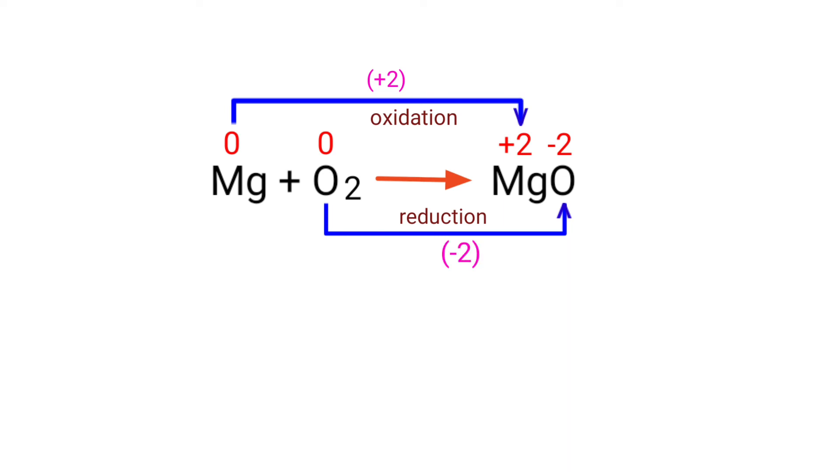In the O2 element, there are 2 oxygen atoms, so total decrease in the oxidation number is minus 4.